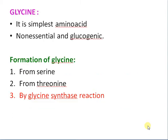Hi, this is Amprasad Nader. Today we are going to discuss about glycine. Glycine is the simplest amino acid — it is non-essential and glucogenic. The formation of glycine is from serine and from threonine.